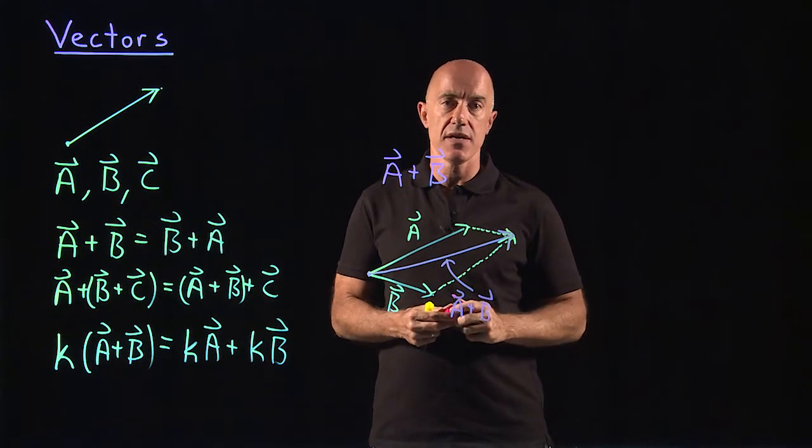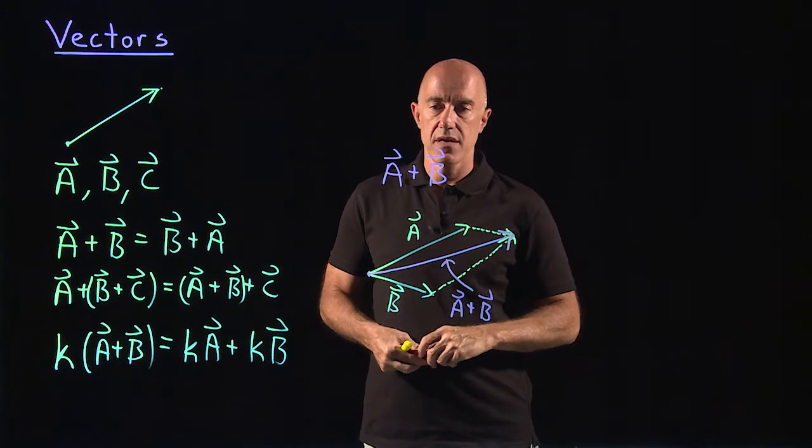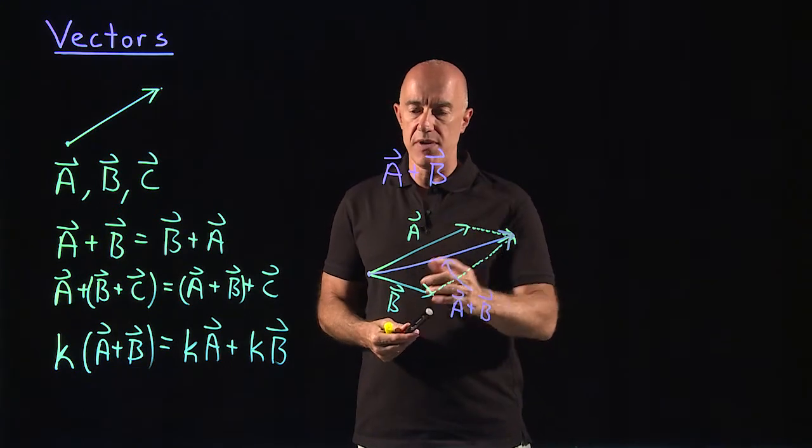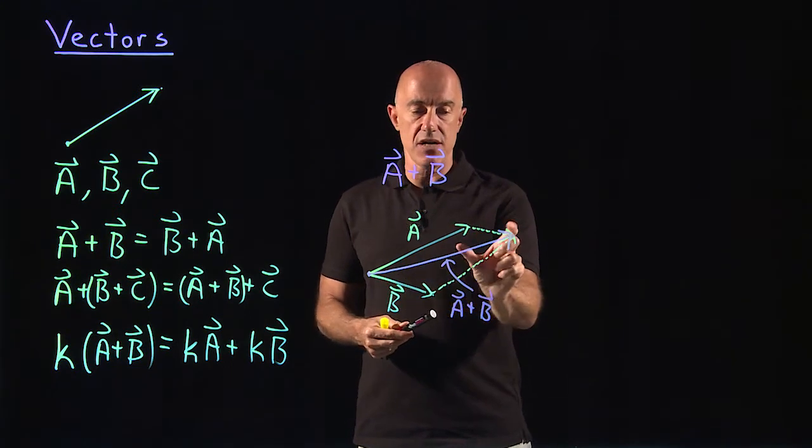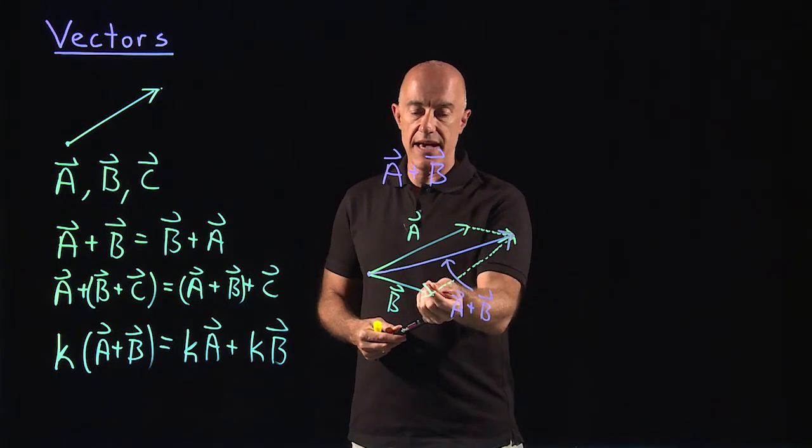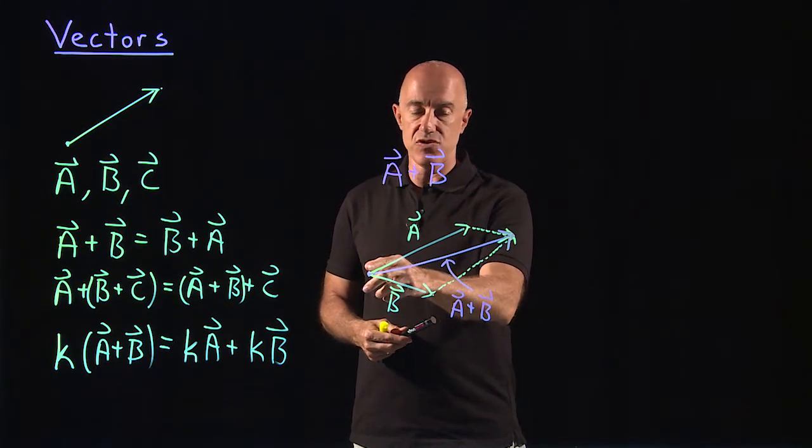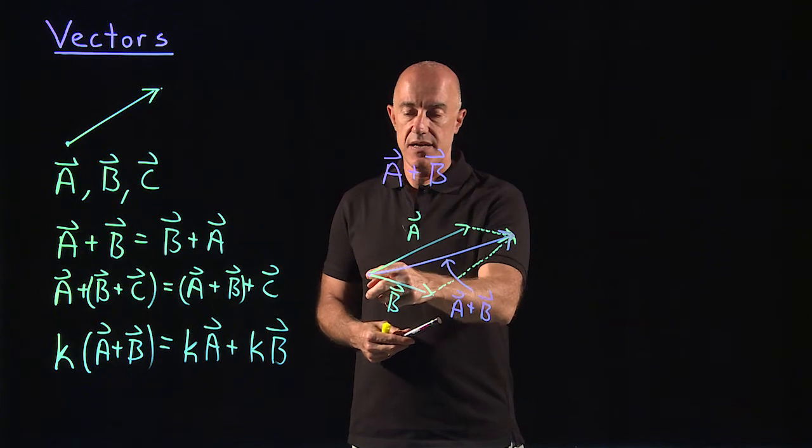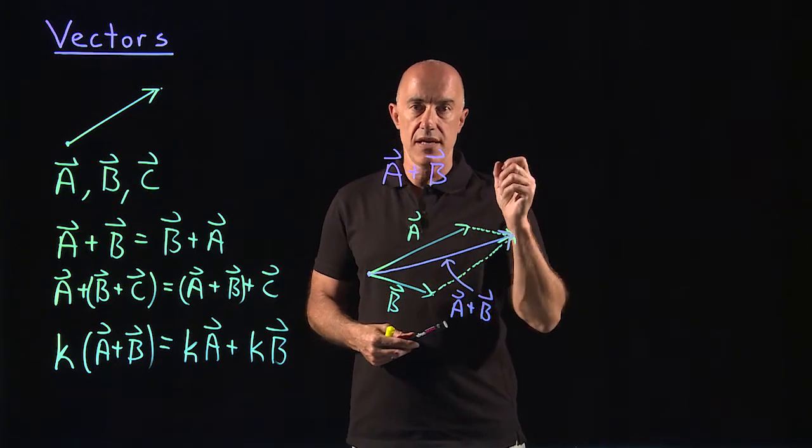Which is also equal to b plus a, which is why you can get there in two different ways. So a plus b is formed by putting the tail of one vector on the head of the other vector, and then drawing the vector that connects the tail to the head.